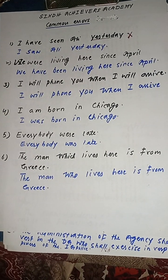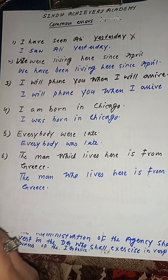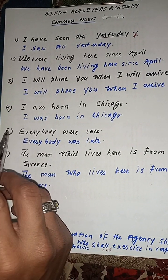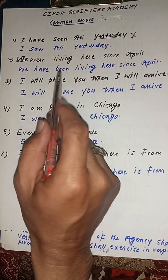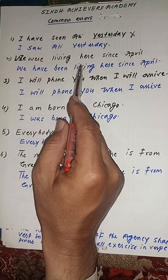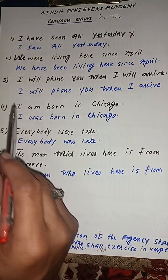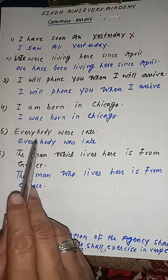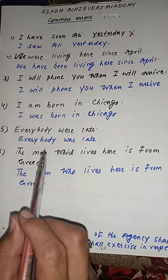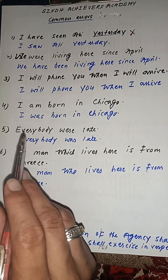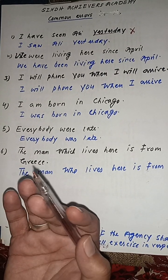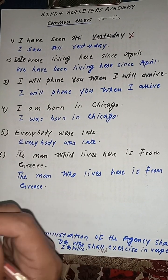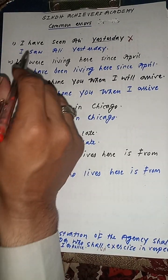بچے اکثر غلطی کر جاتے ہیں — tense کے استعمال میں، word کے استعمال میں، relative pronoun کے استعمال میں، اور noun pronoun کے antecedent میں۔ So, دیکھیں۔